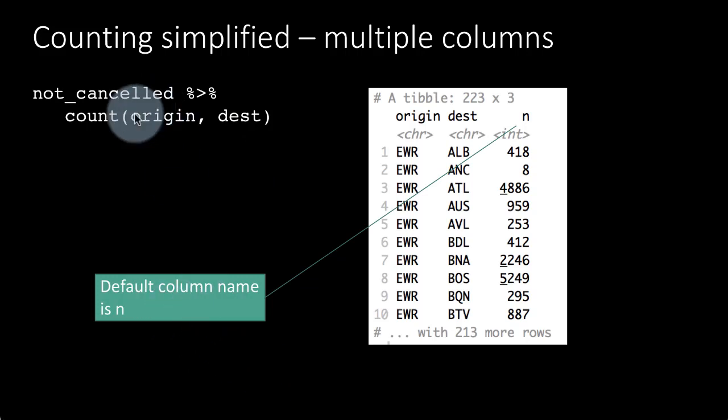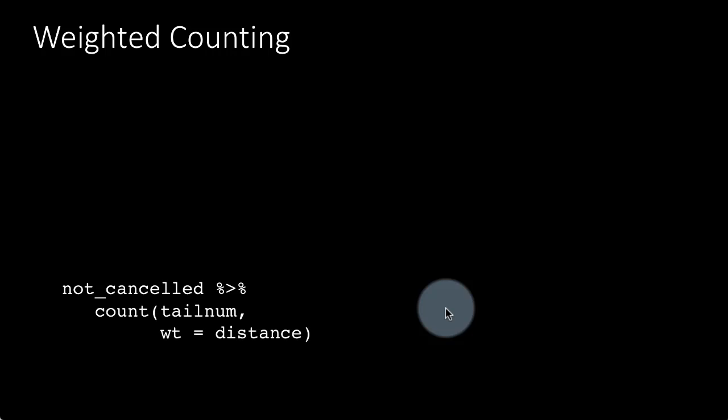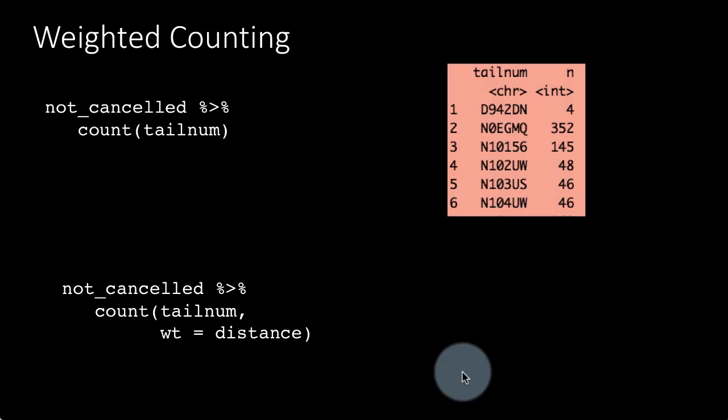You can also do weighted counting just like we did weighted average earlier. So we can say here, not_cancelled, that is taking the same not_cancelled table. We count tailnum but we weight the counting by the distance. So this first thing, not_cancelled count tailnum, is going to tell us for each tail number how many rows occur in the table. So for example, this plane, this piece of equipment D942DN, the plane with the tailnum that made only four flights, whereas the plane with this tailnum made 352 flights.